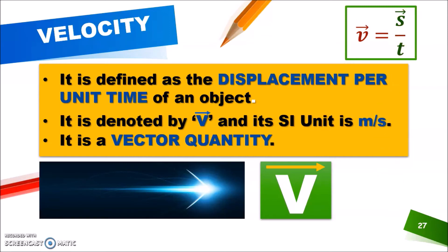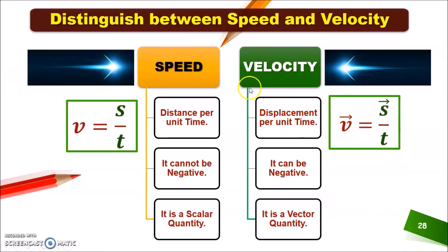I hope you understood the concepts of distance, displacement, speed, and velocity. Now let's look at the distinction between speed and velocity. Speed is distance per unit time; it cannot be negative because distance cannot be negative, and it is a scalar quantity. Velocity is displacement per unit time; it can be negative because direction can be opposite, and it is a vector quantity. These are the two formulas for speed and velocity.